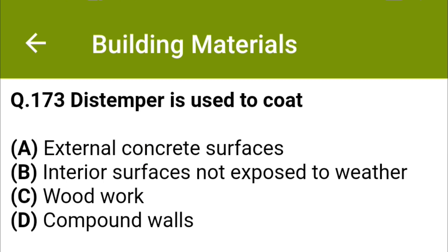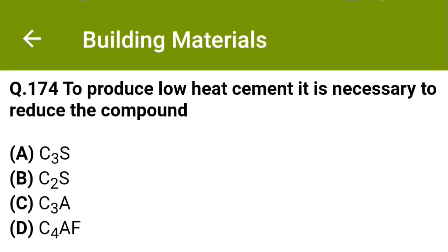Distemper is used to coat: option A external concrete surfaces, option B interior surfaces non-exposed to weather, option C woodwork, option D compound walls. The correct answer is option B: interior surfaces non-exposed to weather.